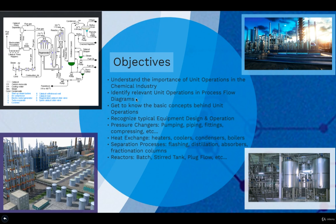Also, identify relevant unit operations in process flow diagrams. If I give you a process flow diagram, you should, at the end of the course, identify the important unit operations and what they are used for. Are they momentum? Are they exchanging heat? Are they doing a reactor operation? Etc.